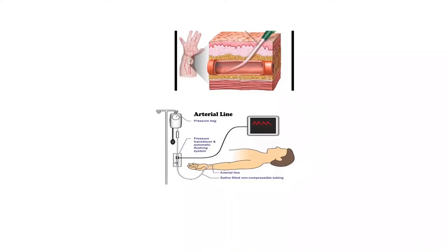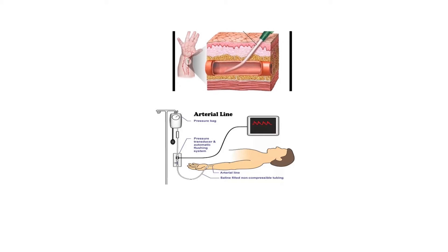As you can see here, we have a catheter going directly into the artery. This catheter is connected to a tubing system that contains a column of normal saline coming from a pressurized bag — pressurized to around 300 mmHg. The catheter detects the oscillations in blood pressure based on systole and diastole, and this pressure is picked up by the column of saline.